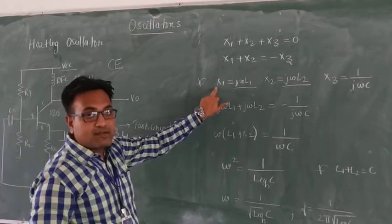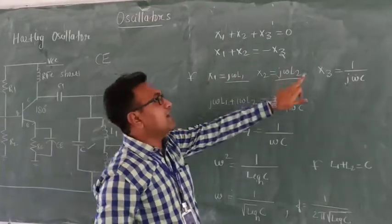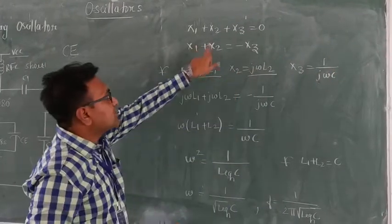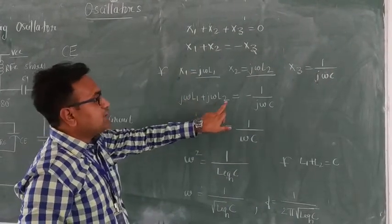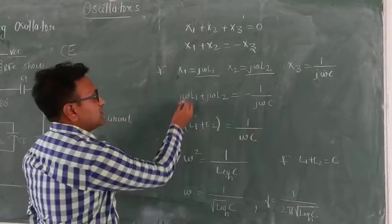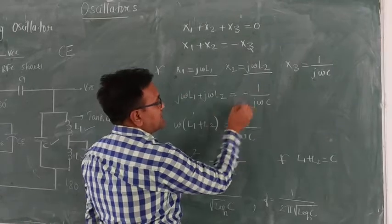Because inductive reactance is written as ωL and capacitive reactance is written as 1/(ωC). The same I will substitute here. jωL1 plus jωL2 is equal to minus 1/(jωC). So here this j and minus 1/j will get cancelled.